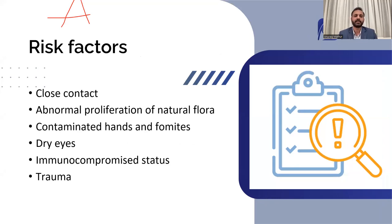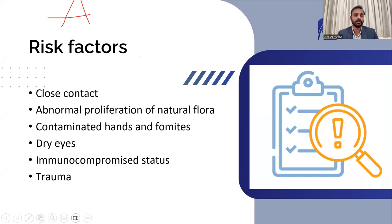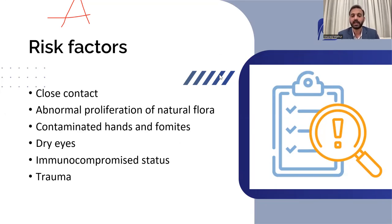What are the risk factors of bacterial conjunctivitis? Close contact with a patient who already has conjunctivitis is a risk factor — true for any form of conjunctivitis — so hygiene is very important and you should maintain a safe distance. Sometimes abnormal proliferation of natural flora occurs, where the bacterial colony count increases and the chances of infection also increase. Contaminated hands and fomites can transmit the disease.